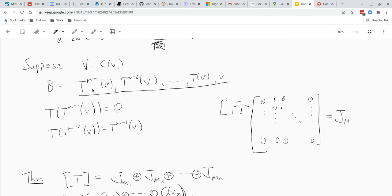Okay and now let's try and calculate the matrix of T. Well to calculate the matrix of T, you take T of the first vector. T of the first vector is T to the M of, so T of T to the M minus 1 of V, which is T to the M of V, which is just zero.